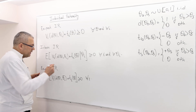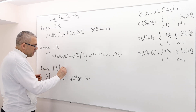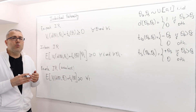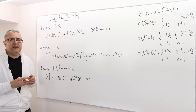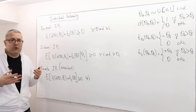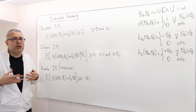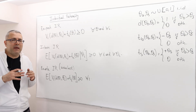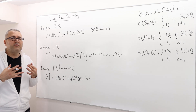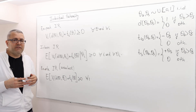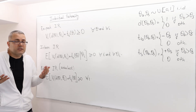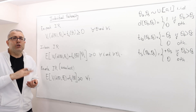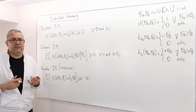The weakest is ex-ante individual rationality. We ask the question: do you want to participate in this mechanism even before the players learn their own types? Basically, they have no information — not about their own valuations and also no information about the opponent's valuation. So in a sense, they have no information, and then we ask them: do you want to participate in the mechanism?